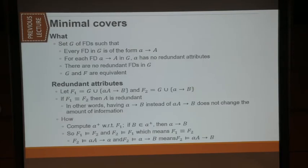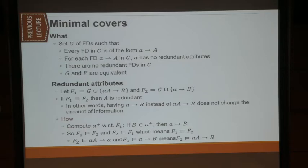The other thing we want to do is minimal covers. We want to do this simply because keeping track of all the functional dependencies is not efficient. You want a smaller — the minimal possible — set of functional dependencies: you cannot remove any of these functional dependencies and still maintain equivalence. And that is used when we talk about the third normal form.